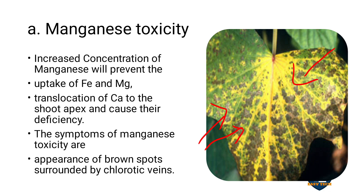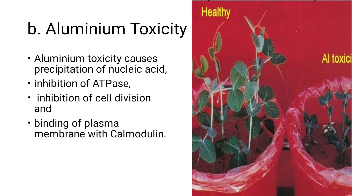Aluminium toxicity — when aluminium exceeds critical levels, it causes precipitation of nucleic acids. So nucleic acid precipitation occurs, forming precipitates.